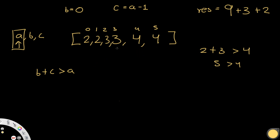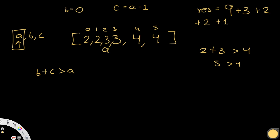Next, a moves left again. B is at 0, c is at a-1. B+c = 2+3 = 5 > a's value, so add c minus b = 2. Move c left: 2+2 = 4 > 3, so add 1. Move c left again — they're at the same index, so we stop. Finally a moves to the last valid position, b=0, c=1: 2+2 = 4 > 2, add 1. Move c and we're done.